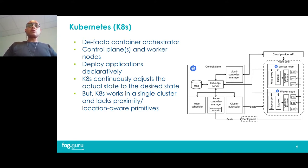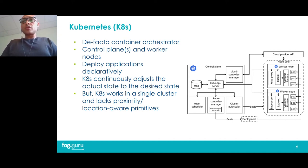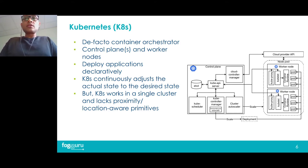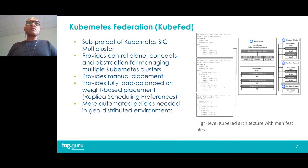However, Kubernetes was designed with a single cluster in a single data center or local area network in mind, and it lacks necessary mechanisms such as proximity-aware placement and network routing that are required in geodistributed environments. So it is not easy to use vanilla Kubernetes to manage resources across multiple regions.